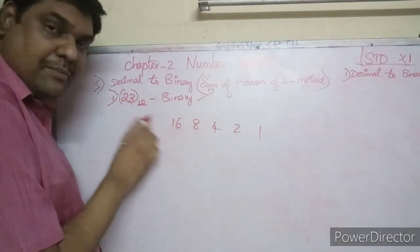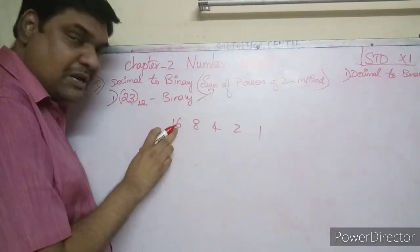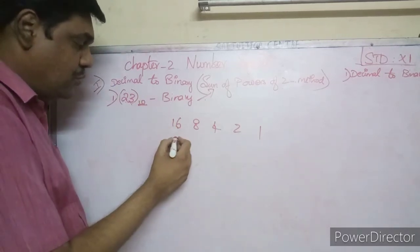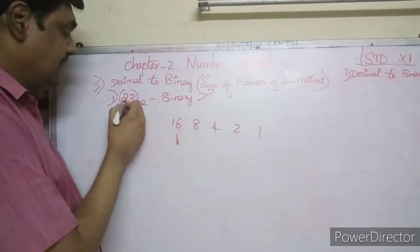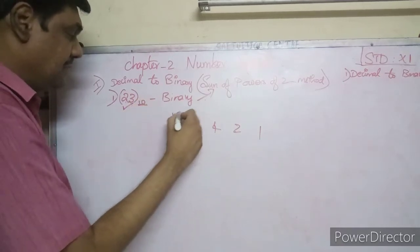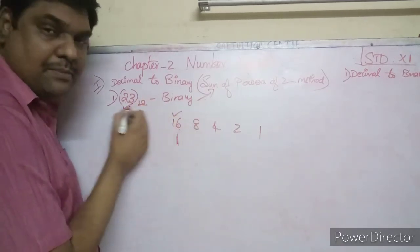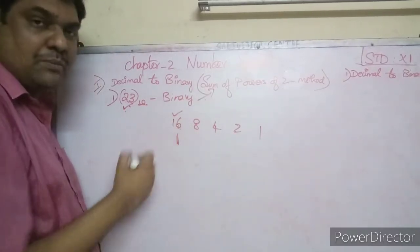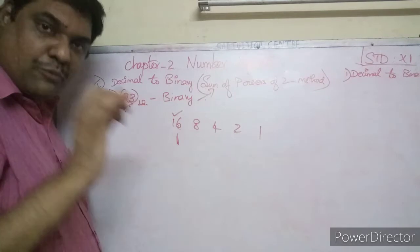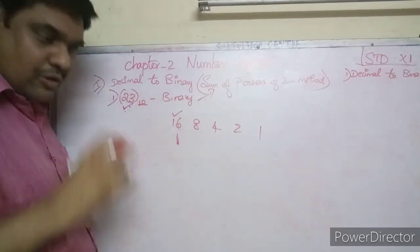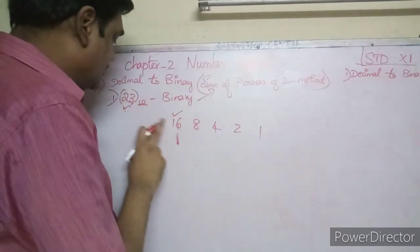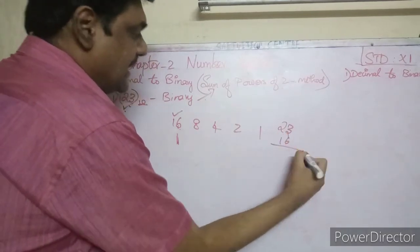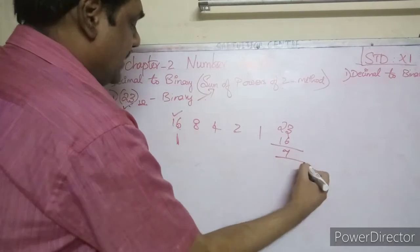First, set up the powers of 2. Compare 23 with each power. Since 16 is less than 23, put a 1. Then subtract 16 from 23, which gives us 7.